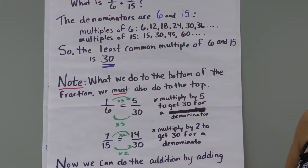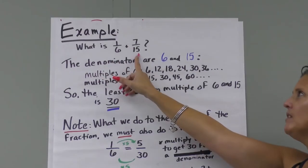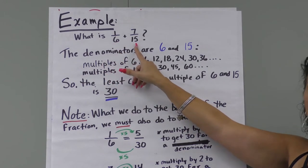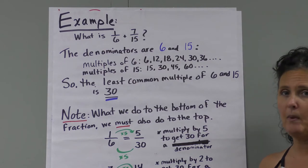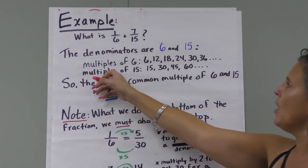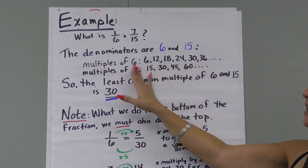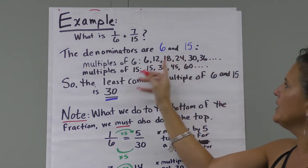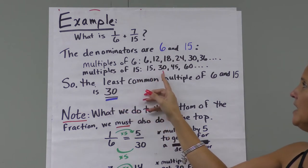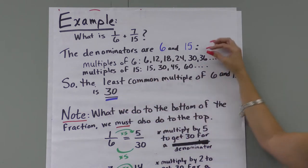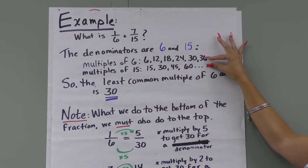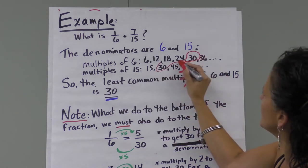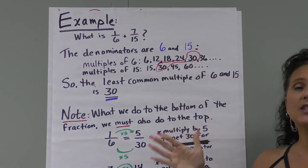Let's look at another example: one-sixth plus seven-fifteenths. The denominators are six and 15. We search for the least common denominator by listing multiples. Multiples of six: six, 12, 18, 24, 30, 36, and so on. Multiples of 15: 15, 30, 45, 60. Comparing these two lists, the least common multiple of both six and 15 is 30 — we can circle it right there. So 30 is our least common denominator.